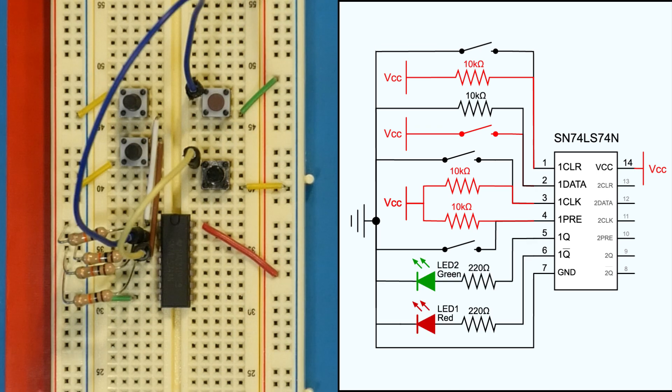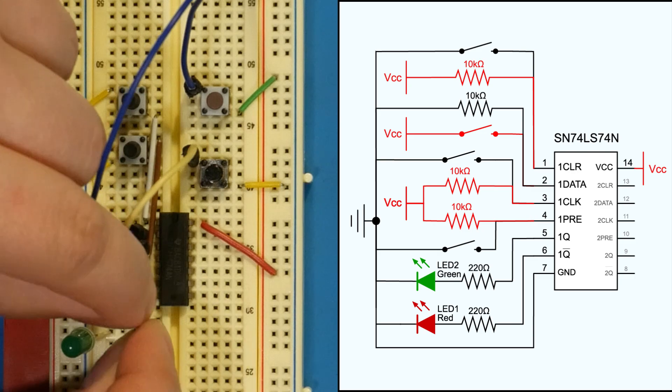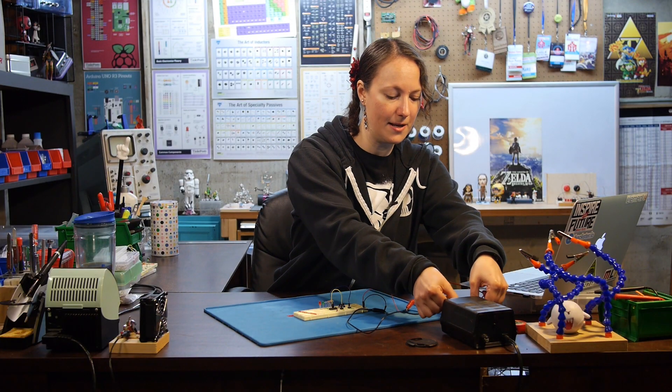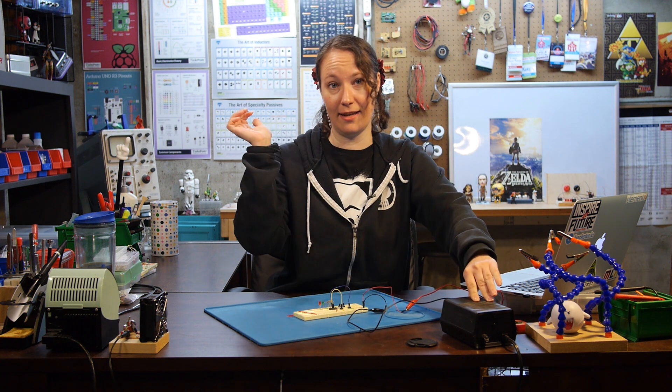Last up is our outputs Q and not Q. I'll use a couple LEDs with current limiting resistors to connect the outputs to ground. That way we can see when they're high or low. Green for Q and red for not Q. We'll just connect to our power supply and turn on.